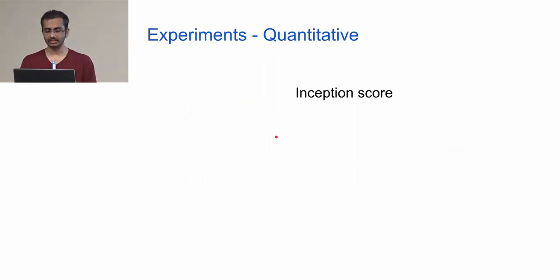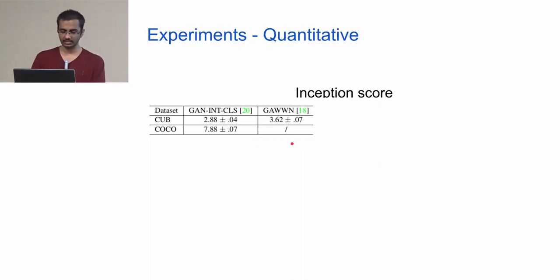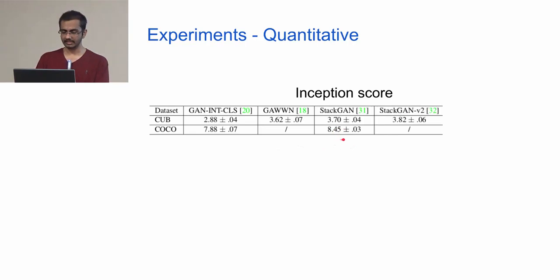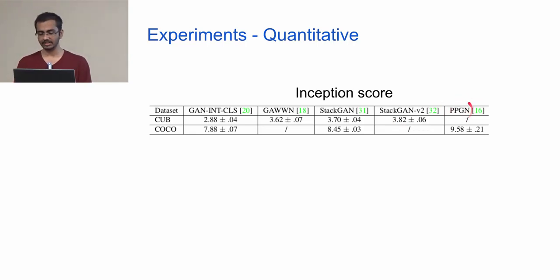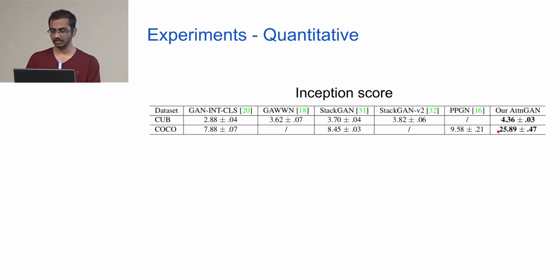In quantitative evaluation on inception score, AttnGAN outperforms all prior methods. Comparing against Reed et al. (ICML 2016), StackGAN, StackGAN V2, and PPGN, AttnGAN achieves substantially higher scores, particularly on COCO where the margin is very large. PPGN was not designed for text-to-image but was evaluated on COCO for comparison.